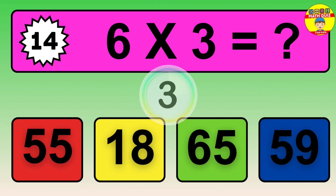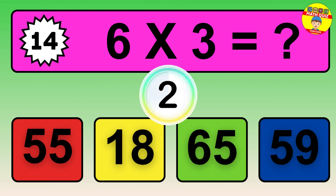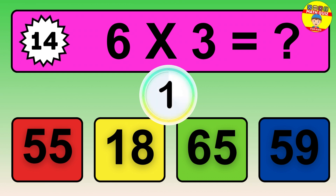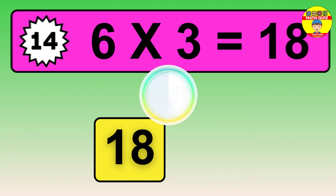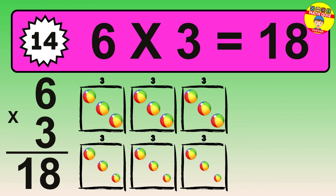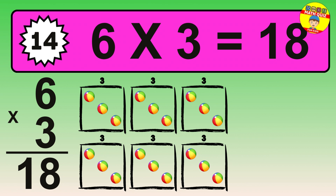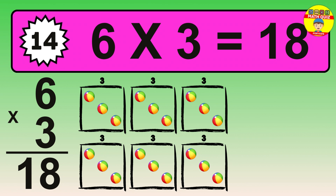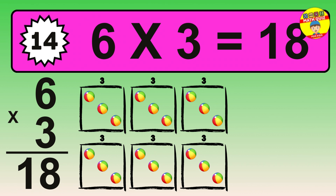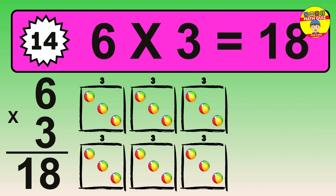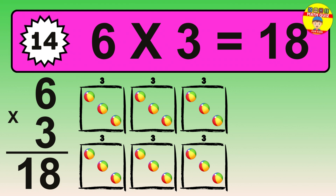Question 14. 6 times 5 equals what? Question 15. 6 times 3 equals what? The answer is 6 times 3 is 18. To calculate, we have 6 groups with 3 balls each one. So, how many balls do we have? 18 balls.